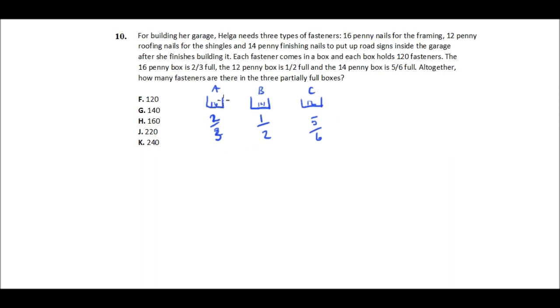I can start off by figuring out - I know all of these have parts of 120. We don't have exactly 120 in each. So 2/3 of 120, I can do that on my calculator: 120 times 2/3, which is 0.6 repeating, and I get 80. So there's 80 nails in there.